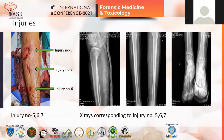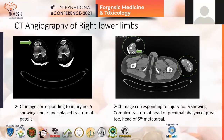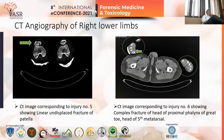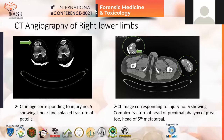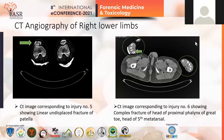So the weapon used was blunt. However, on CT images, we can see that there was a fracture of the patella. The first picture shows a linear undisplaced fracture of the patella corresponding to injury number five. The second CT picture shows a complex fracture of the head of the proximal phalanx of the great toe and the fifth metatarsal. So injuries number five and six are grievous in nature.